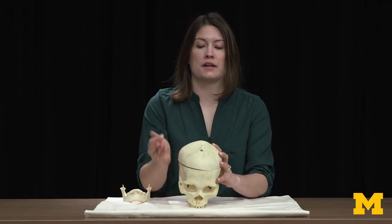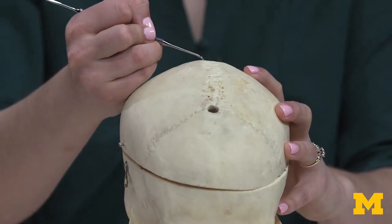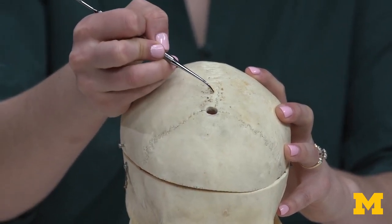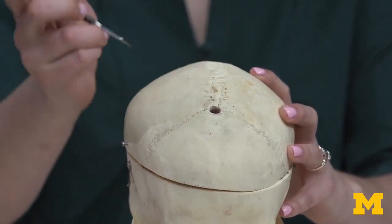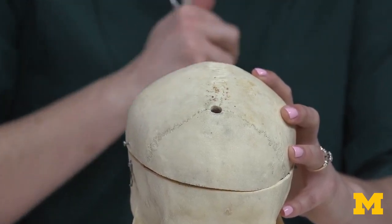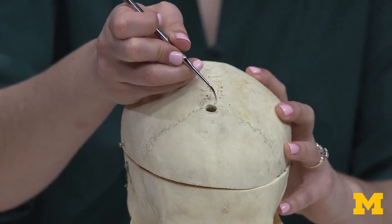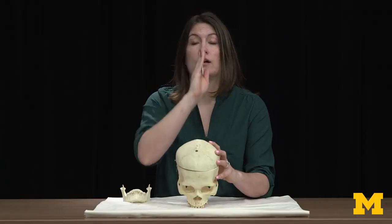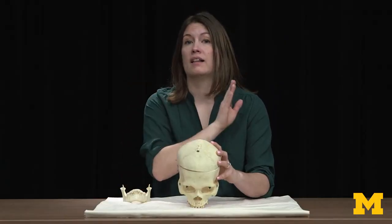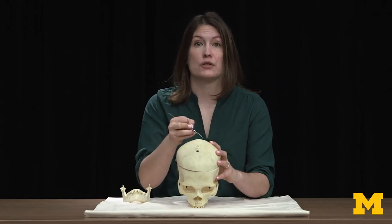Continuing posteriorly, you have a slightly longer suture in this region. This is your sagittal suture, located between your right and left parietal bones — those bones on the side of your skull. If you've ever heard of a sagittal plane, think of splitting your body right in the middle into a right side and a left side. That's where it gets its name, from this sagittal suture.